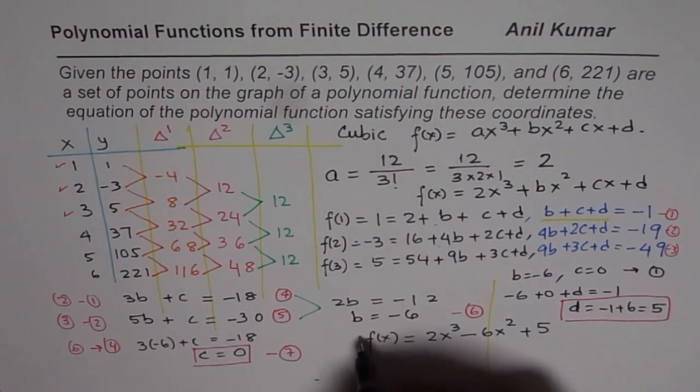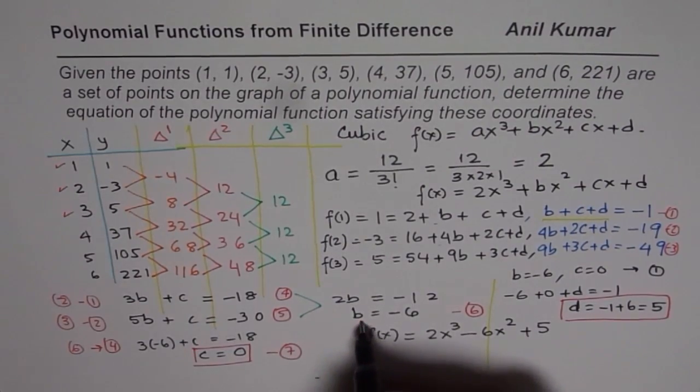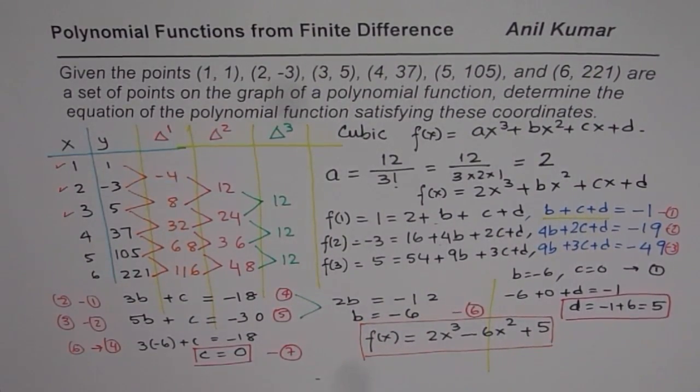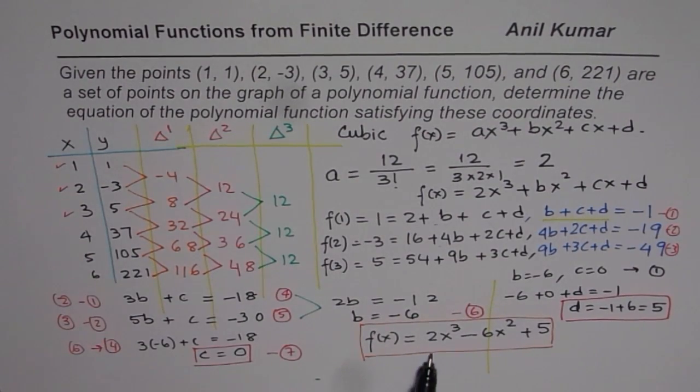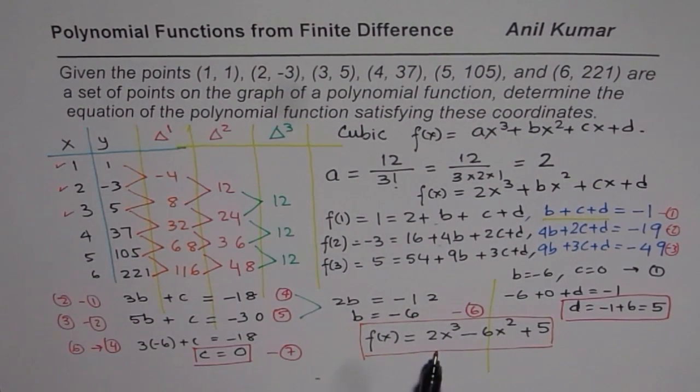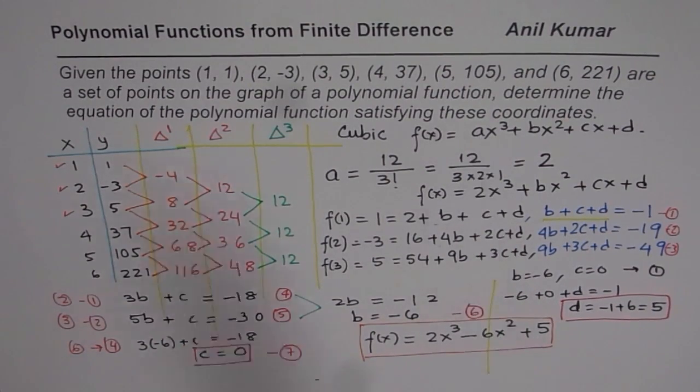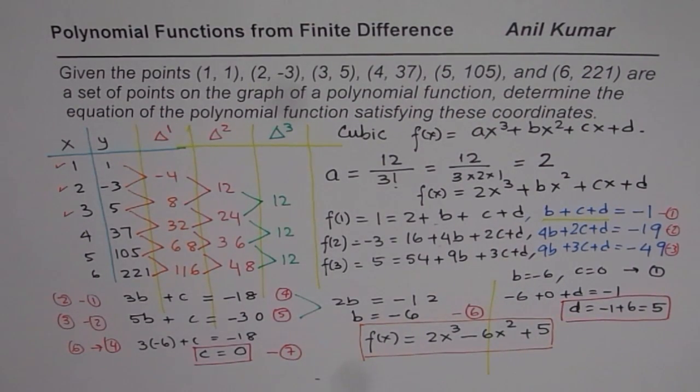So what you see is, this time, we could solve with 3 equations, since we knew what a is from constant finite difference. And we could get the equation of the polynomial in very few steps, as compared to the previous example, where we used 4 equations, since we wanted to find the value of a also. So this is more effective.